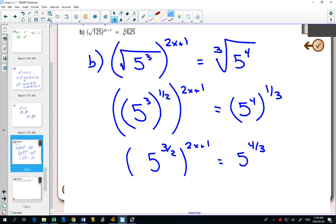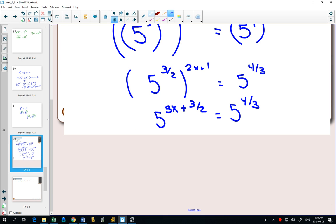And I have, again, an exponent to an exponent. So what do I have to do again? I need to multiply. And when I multiply here, I'm going to need to distribute. 3 halves times 2x, 3x, 3 halves times 1 plus 3 halves equals 5 to the 4 3rds. We had to go through a lot of exponent rules to get to the place where we had both sides with the same base, a single power on both sides.